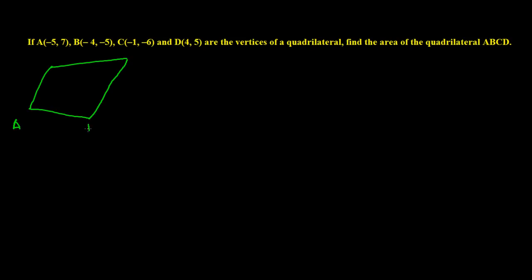Here are the coordinate points: A is (-5, 7), B is (-4, -5), C is (-1, -6), and D is (4, 5). To find the area of a quadrilateral in geometry, we normally use the formula: one-half times diagonal times the sum of perpendiculars. But here it's very hard to find the length of the diagonals and perpendiculars, so we need to use the coordinate system approach instead.